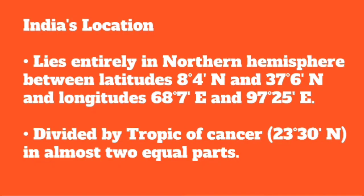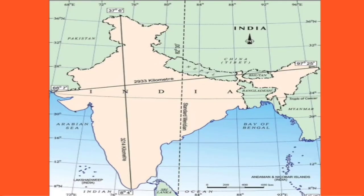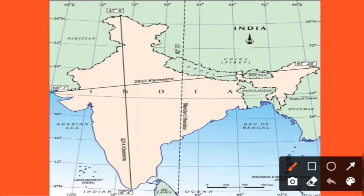And the Tropic of Cancer divides India into almost 2 equal parts. The Tropic of Cancer is at 23 degrees 30 minutes north, and it passes through India.